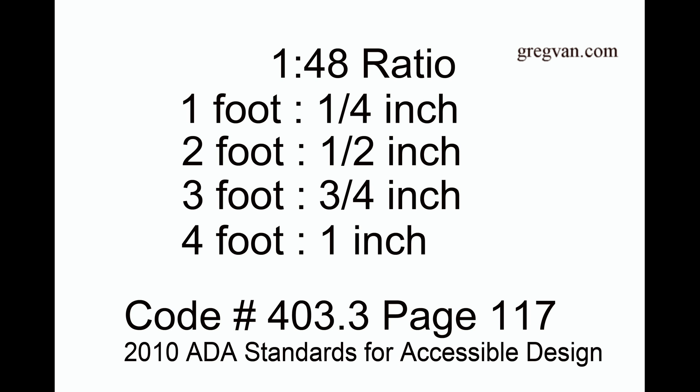I'm using 36 inches because this is the minimum width of the walkway according to building code 403.3: the running slope of walking surfaces shall not be steeper than 1 in 20, and the cross slope of walking surfaces shall not be steeper than 1 in 48.